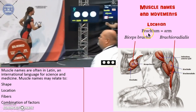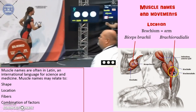Location. Brachy means arm, so you see the prefix brachii — bicep means two heads, and there we have it: bicep brachii. How about the brachioradialis? That's a long word, but it makes sense. Brachii means arm, and radialis refers to the radius of the forearm — so brachioradialis.